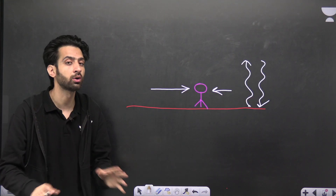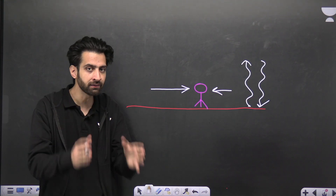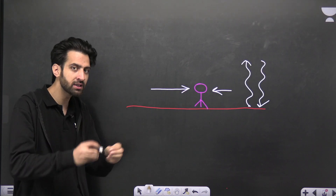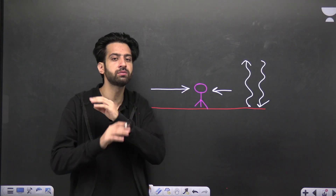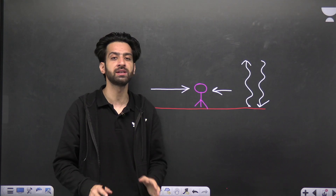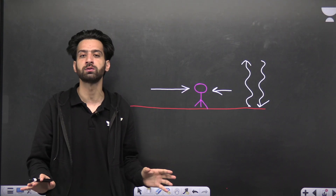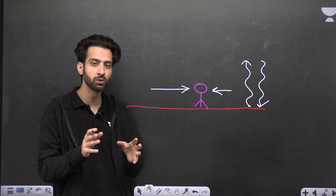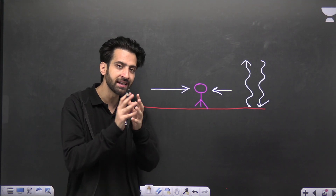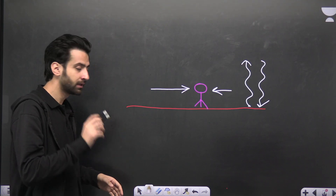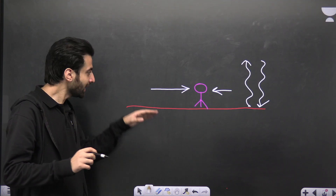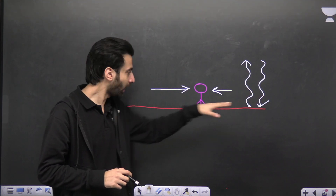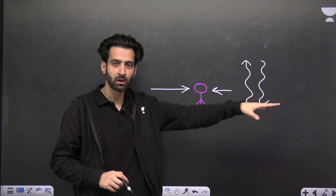Don't get confused — there are no synonyms here. Wind specifically means horizontal motion of air. This is a very technical topic, so understand each point carefully. Now, why does wind move horizontally? What is the reason?